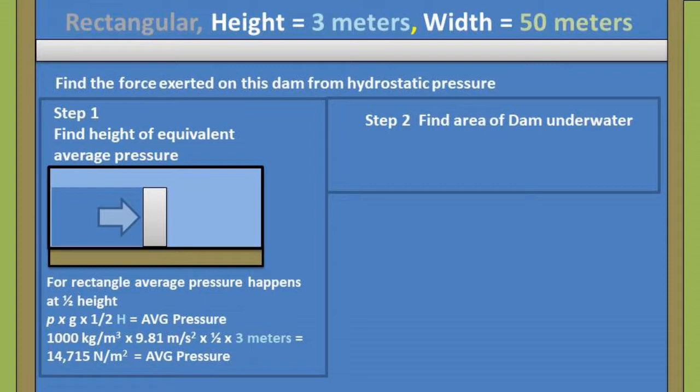The second step of this problem is to find the area of the dam that is underwater. In this case, we can take the height of 3 meters times the width of 50 meters to get the area of 150 meters squared.